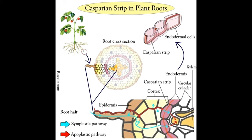Plants need water and minerals to perform photosynthesis and prepare food for their survival. These substances are absorbed by the plant's roots and travel inwards from the root surface to the vascular cylinder, from where they travel upwards via the xylem, a type of transportation tissue. These substances travel in two ways: the apoplastic pathway, where water and dissolved substances travel through the spaces in cell walls without entering any cell, and the symplastic pathway, where substances travel from the cytoplasm of one cell to the cytoplasm of another through the plasma membrane.